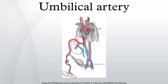The umbilical arteries are one of two arteries in the human body that carry deoxygenated blood, the other being the pulmonary arteries. The pressure inside the umbilical artery is approximately 50 mmHg.